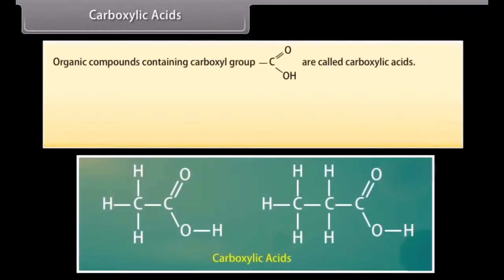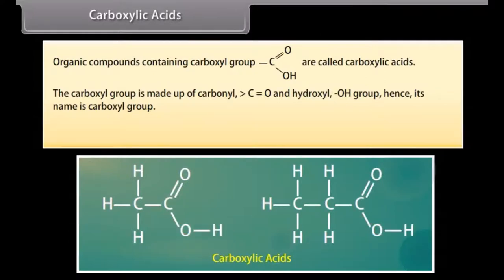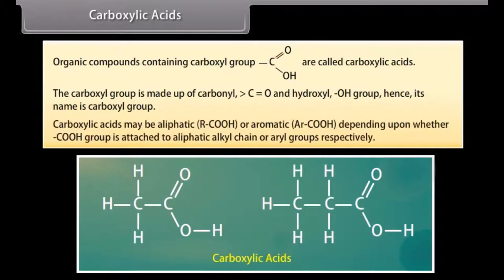Carboxylic acids: Organic compounds containing a carboxylic group are called carboxylic acids. The carboxyl group is made up of a carbonyl and a hydroxyl group, hence its name is carboxyl group. Carboxylic acids may be aliphatic or aromatic depending upon whether the carboxyl group is attached to an aliphatic alkyl chain or aryl groups respectively.